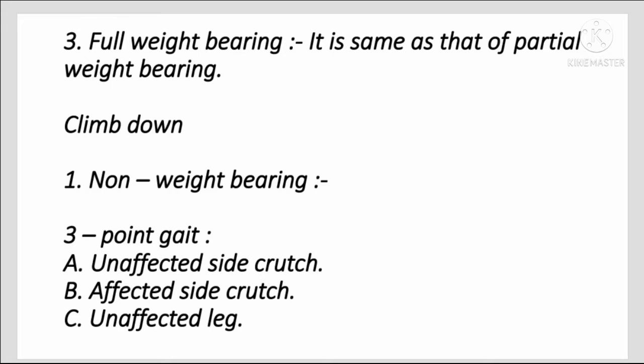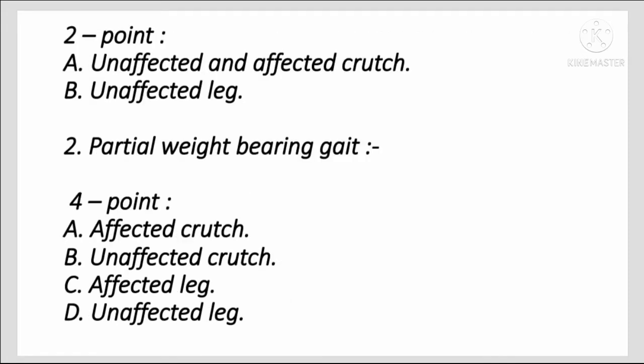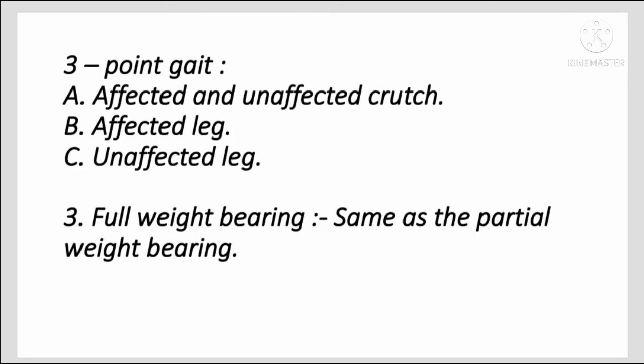Climbing down: Non-weight bearing 3-Point Gait — unaffected side crutch, then affected side crutch, then unaffected leg. 2-Point — unaffected and affected side crutch together, then unaffected leg. Partial weight bearing 4-Point Gait — affected crutch, then unaffected crutch, then affected leg, then unaffected leg. 3-Point — affected and unaffected crutch, then unaffected leg. Full weight bearing is same as partial weight bearing.